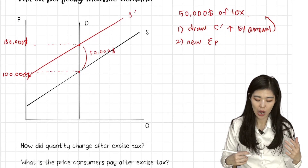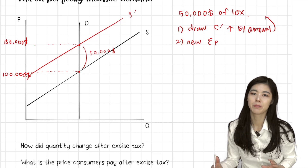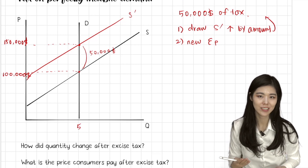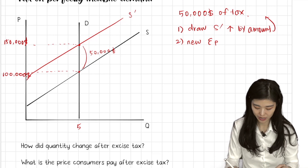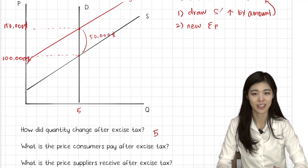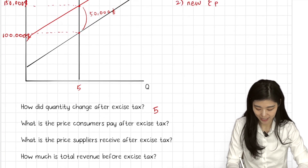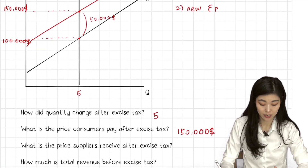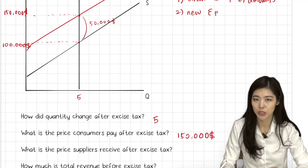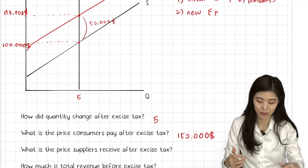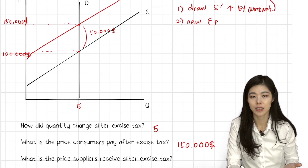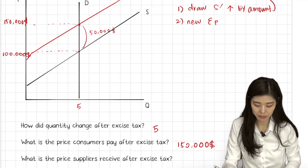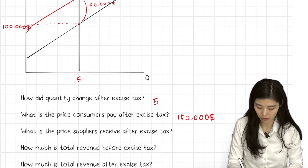Now, what happens? How did the quantity change? Perhaps only five pills can be made a year. So the quantity does not change even after the tax. The price consumers pay after the tax is $150,000 for the pill. What's the price suppliers receive after the tax? The price consumers pay has increased by the amount of tax, but the suppliers will have to pay $50,000 of tax to the government anyway. So they will still be receiving $100,000 for this pill — the same as before.